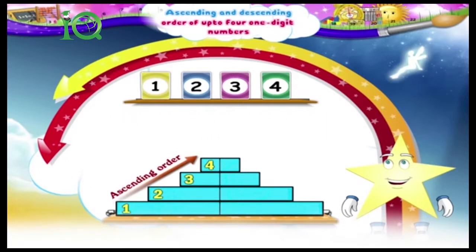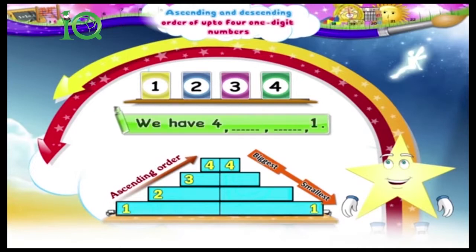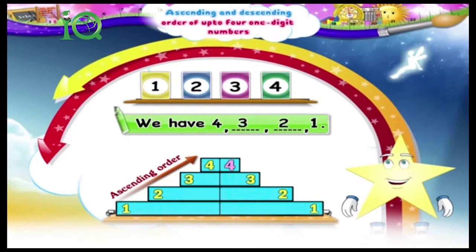For the descending order, we take the biggest number first and then the smallest. So four, dash, dash, one. Between three and two, three is the bigger number. We get four, three, two, one — the arrangement in descending order.